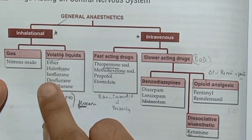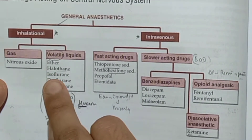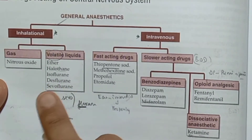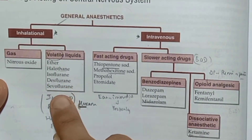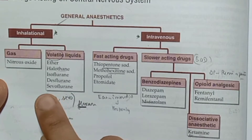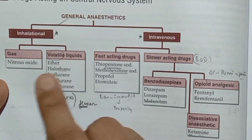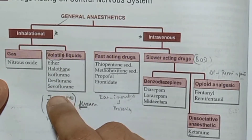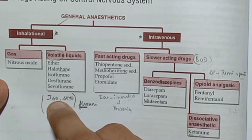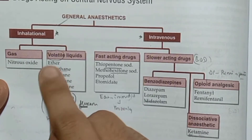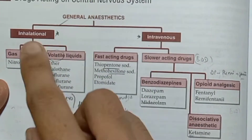The fluorane group includes isoflurane, desflurane, and also halothane and ether. So the fluorane group is: isoflurane, desflurane — both are volatile liquids.